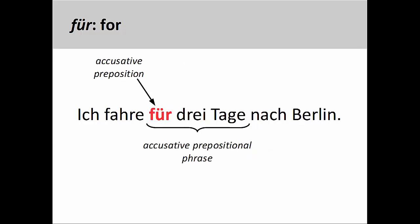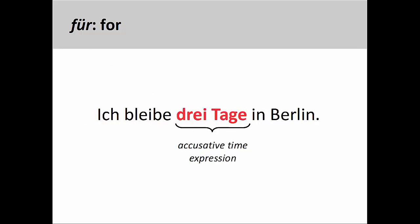Für can also be used to express a duration of time, but only when the verb functions independently of the time element. For example, 'Ich fahre für drei Tage nach Berlin' — I am traveling to Berlin for three days. Here the accusative prepositional phrase relates how long I intend to stay. However, if the time expression modifies the activity of the verb, we must use an accusative time expression without the preposition für. For example, 'Ich bleibe drei Tage in Berlin' — I am staying three days in Berlin, where the accusative time expression provides more information about how long I will be staying.